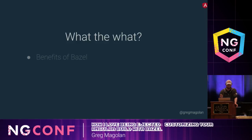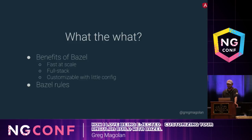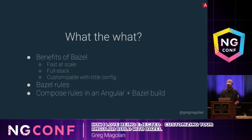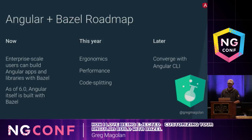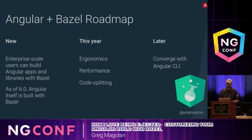To summarize: today I went over the benefits of Bazel — namely, Bazel is fast at scale, it's full-stack, and it's customizable with very little config. I talked about the Bazel rules that you'd use to build, test, and run an Angular application, and I talked about how to compose those rules and chain them together to customize an Angular build. Angular Bazel is still in Angular Labs and it's not ready for production, but you can try Bazel today to build an Angular application or library using the rules I've talked about. As of 6.0, Angular itself is also built with Bazel using the same rules, so you can look in the Angular repository and see how the build system works there. This year, our plan for Angular Bazel is to improve the ergonomics — meaning better error messages, better tooling, and potentially generating build files for you, because they can be a pain to maintain.